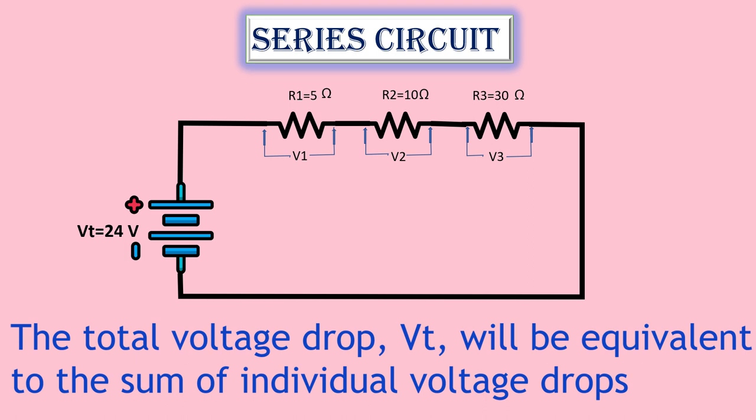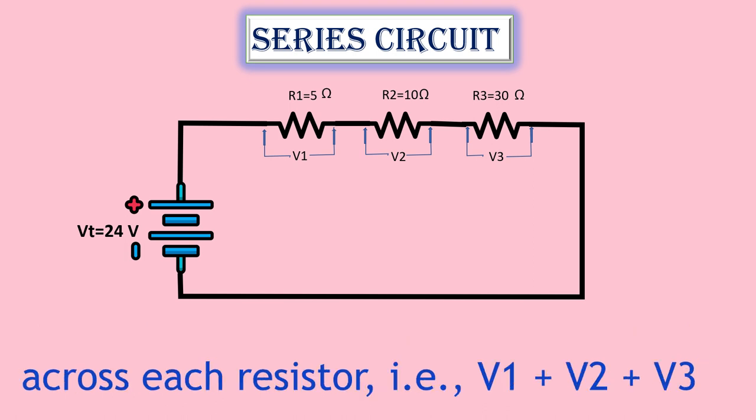The total voltage drop, Vt, will be equivalent to the sum of individual voltage drops across each resistor, i.e., V1 plus V2 plus V3.